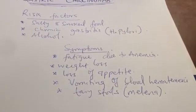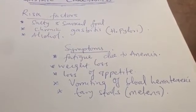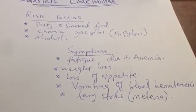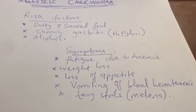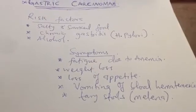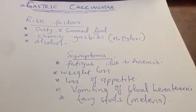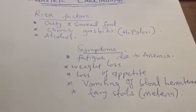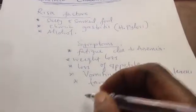When the blood from the bleeding cancer goes into the intestine, the blood cells are lysed and oxidized. That is why it presents not as fresh blood but as black tarry stool known as melena. Most gastric cancer is of the adenocarcinoma type.